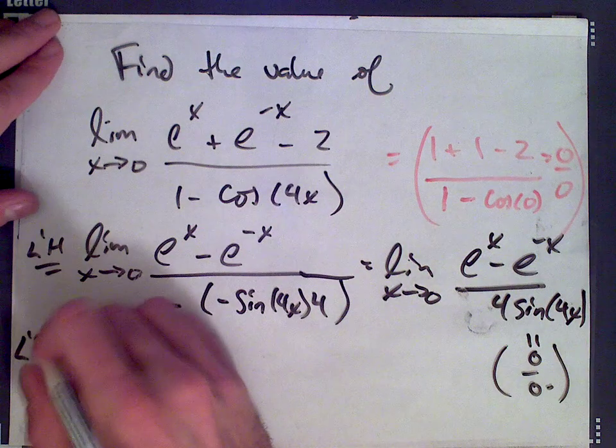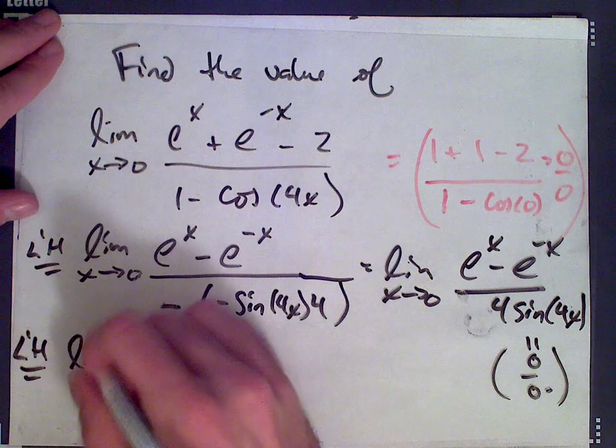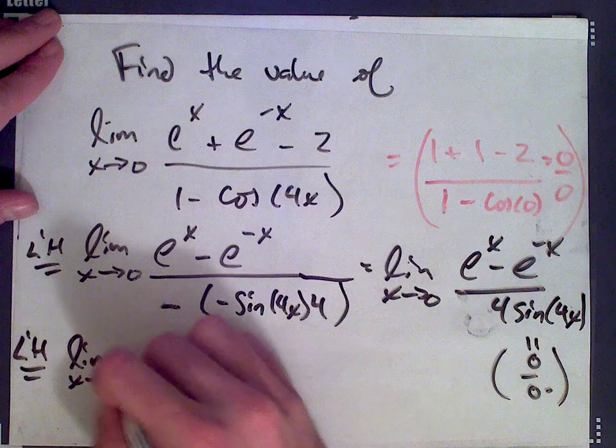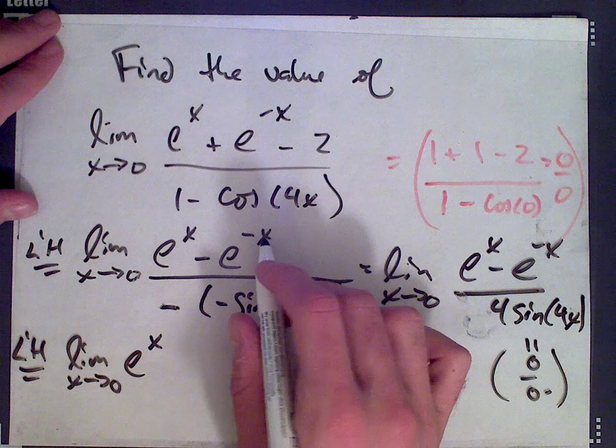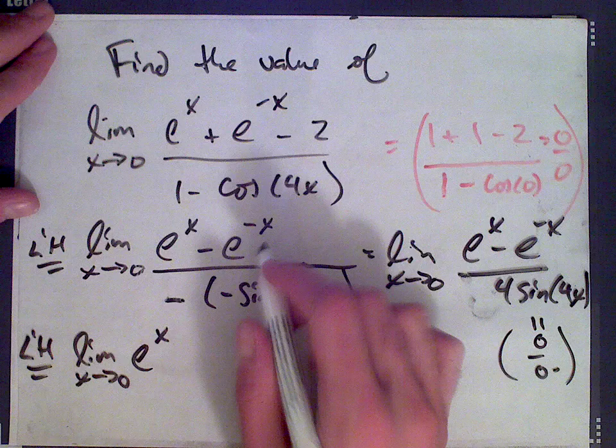We use L'Hopital's rule one more time. We get e to the x minus, and then another negative sign from the derivative of negative x gives a plus e to the x over, so the derivative of 4 sine of 4x is 4 cos 4x times 4.